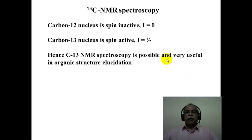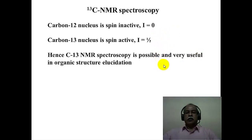As far as carbon isotopes are concerned, carbon-12 isotope has no spin — it is spin inactive, I is equal to 0. Whereas carbon-13 nucleus has a spin of half, just like proton. Therefore, carbon-13 NMR spectroscopy is possible and is a very useful tool in organic structure elucidation, because it gives a lot of information about the carbon skeleton of organic compounds.